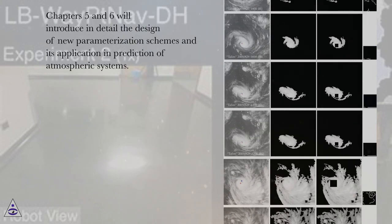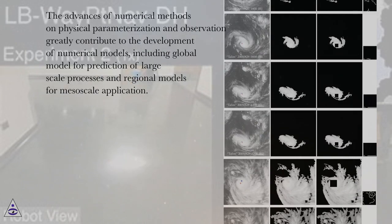Chapters 5 and 6 will introduce in detail the design of new parameterization schemes and its application in prediction of atmospheric systems. The advances of numerical methods on physical parameterization and observation greatly contribute to the development of numerical models, including global model for prediction of large-scale processes and regional models for mesoscale application.